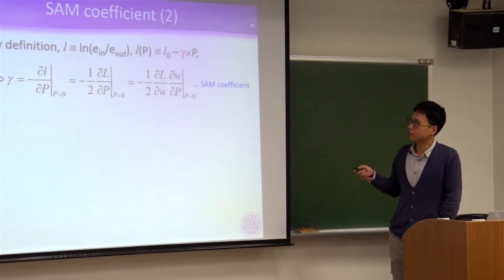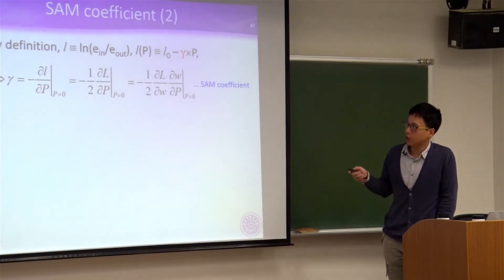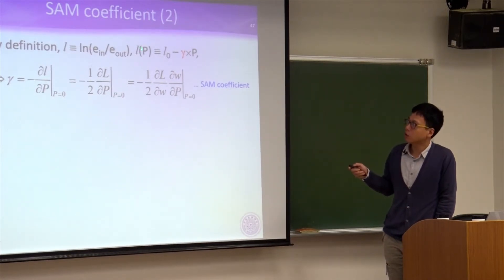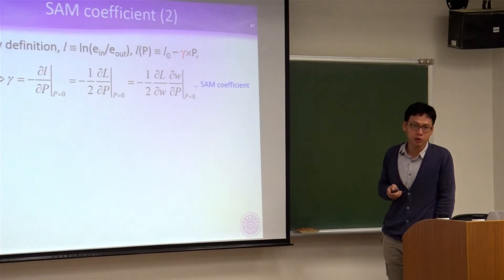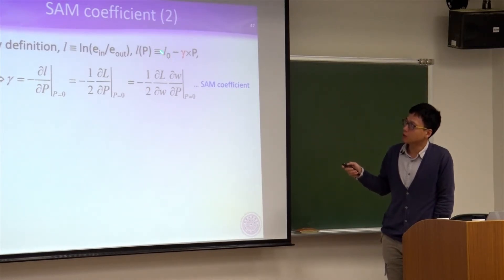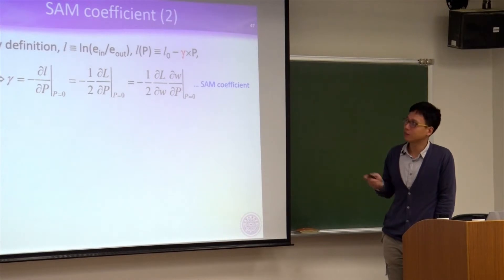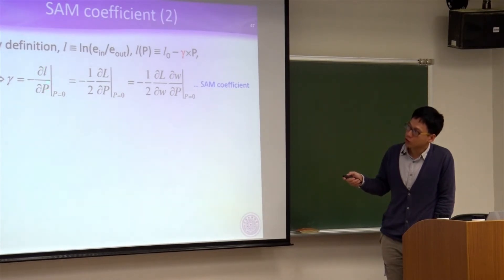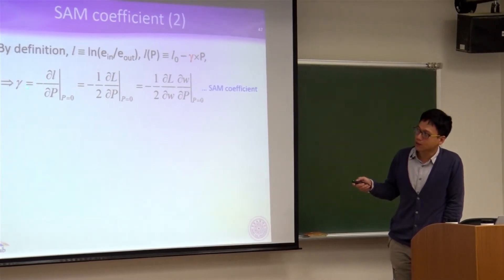By definition, the field loss coefficient l is defined as natural logarithm of input field over output field. According to our model, loss coefficient is not a constant but a function of laser power P, and in the simplified model it equals some linear term L0 minus the SAM coefficient gamma times laser power P. To calculate gamma, perform the partial derivative of loss coefficient with respect to laser power, substitute P equals 0, and with a minus sign you obtain gamma.